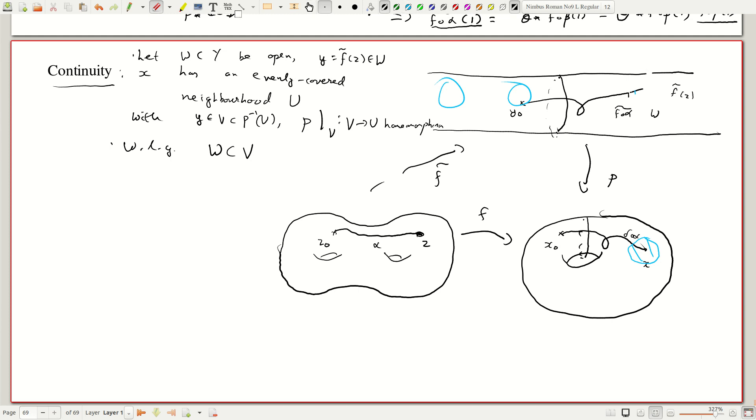So that in, so we have a path here, we have a path here. This ends in y which is f tilde of z. We have an evenly covered neighborhood.